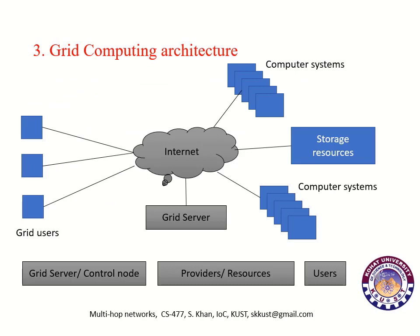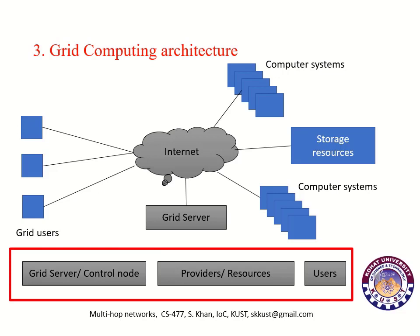Grid computing architecture: In this diagram a simple grid computing architecture is given. A grid computing network mainly consists of three types of machines. The first is the control node, or grid server.